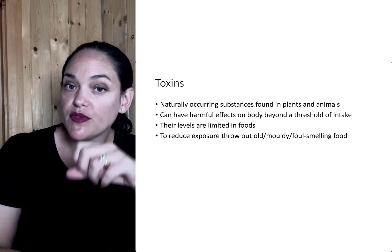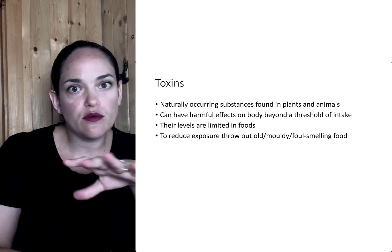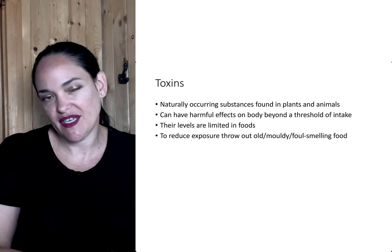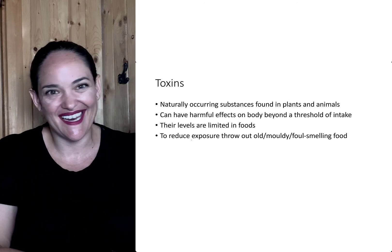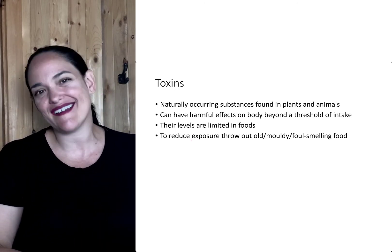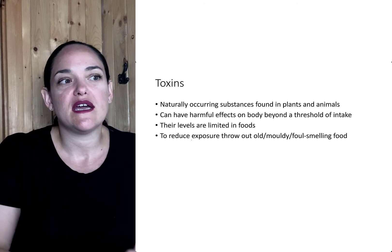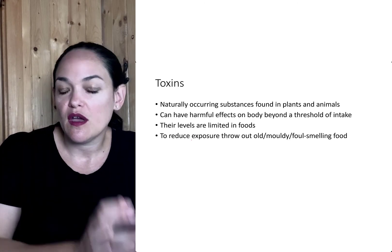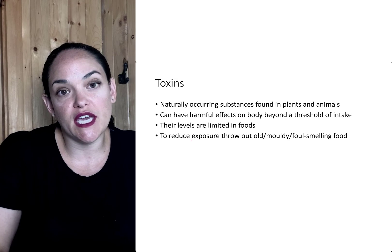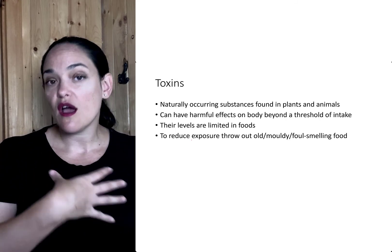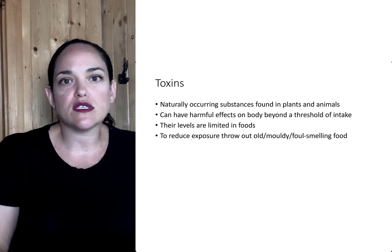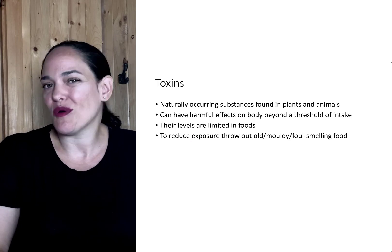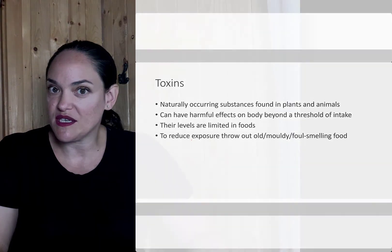If you are worried about the amount of toxins in your food, a good rule of thumb is: anything that's stinky, smelly, old, or moldy — get rid of it. Don't eat anything that has a weird color that shouldn't be there; it's best to throw that food out, because when foods go off, they're more likely to have these toxins. Our kidneys, liver, and even our lungs are really good at getting rid of toxins, so as long as we're eating a wide variety of foods and not overdosing on anything in particular, we're probably going to be okay.